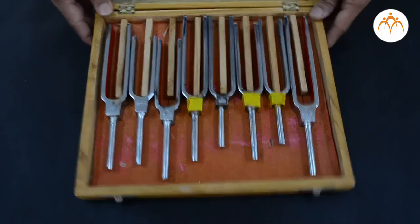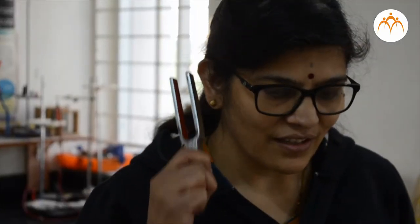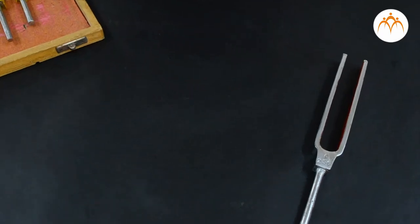You might have seen this before. Let me take it and hit it on the hard rubber block. It makes a sound. This is called a tuning fork.